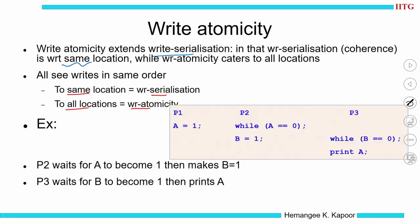Let us take an example. P1 assigns A equal to 1. P2 waits for A to become 1 and only then makes B equal to 1. P3 waits for B to become 1 and then prints A. Intuitively, the programmer expects the printed value to be 1 by transitivity — although P3 does not directly interact with P1, via P2 it should guarantee getting A equal to 1. This is where write atomicity is useful: A became 1 and this will invalidate or update all copies — one copy with P2 and another with P3.